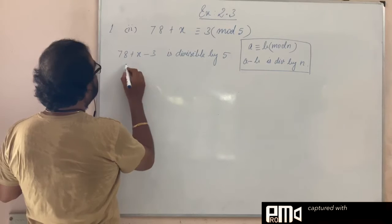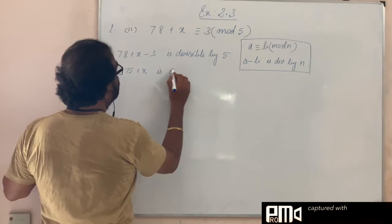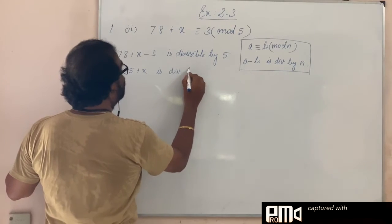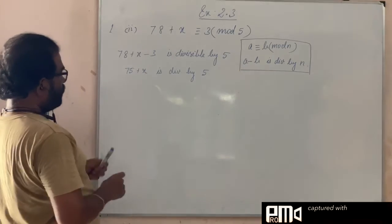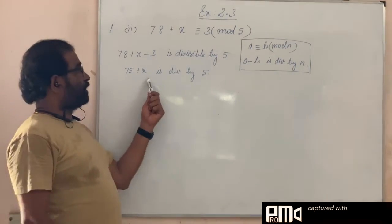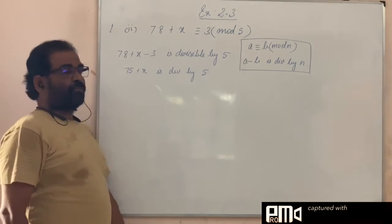Now 78 minus 3 is 75, so 75 + x is divisible by 5. What is the value of x? The least positive value of x that satisfies after addition with 75 is divisible by 5.